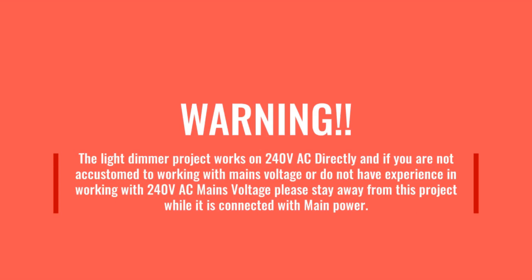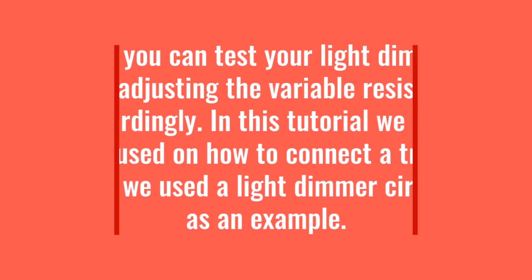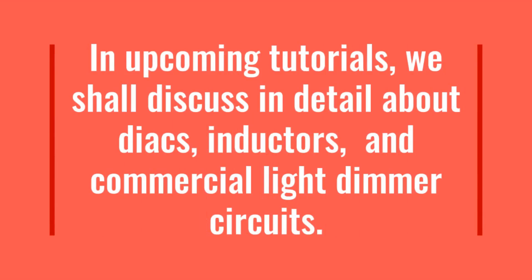The light dimmer project works on 240 volts AC directly. If you are not accustomed to working with mains voltage or do not have experience working with 240-volt AC mains voltage, please stay away from this project while it is connected to mains power. Now you can test your light dimmer by adjusting the variable resistor accordingly. In this tutorial we have focused on how to connect a TRIAC, using a light dimmer circuit as an example. In upcoming tutorials we shall discuss in detail about DIACs, inductors, and commercial light dimmer circuits.